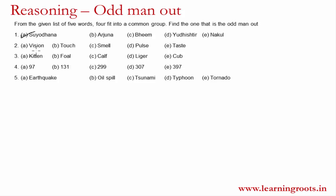The second question says: Vision, Touch, Smell, Pulse and Taste. On cursory reading you should be able to figure out that 4 of them are senses and one of them is not. Vision is a sense, Touch is a sense, Smell is a sense, Taste is a sense. Pulse is not a sense — it is a physiological phenomenon that occurs in your body. So Pulse is the odd man out.